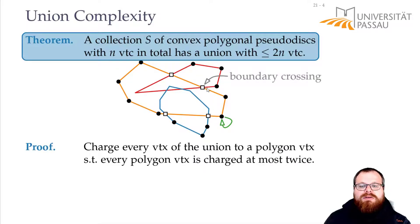But for these boundary crossings we cannot so easily do this. However, every boundary crossing means that for one of those two polygons that cross, there has to lie at least one vertex inside the other polygon.